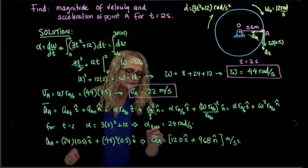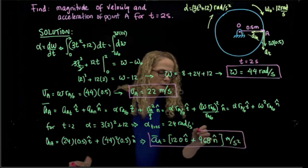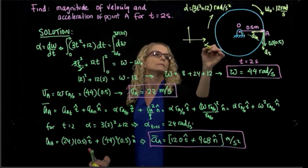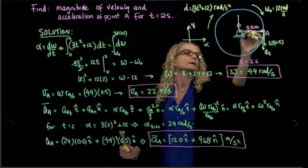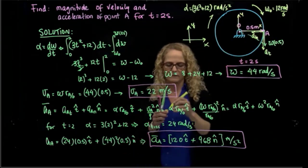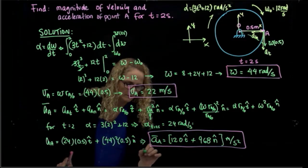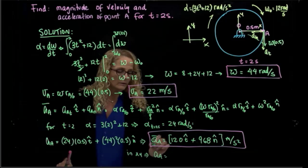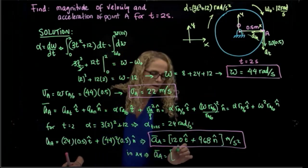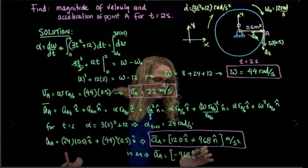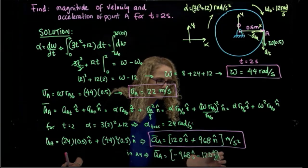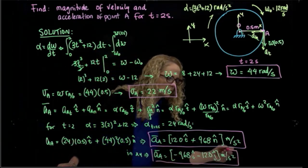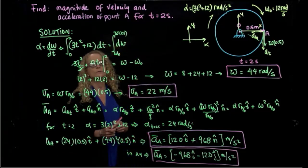This is the acceleration expressed in the tangential-normal coordinate system. If we want to relate it to an inertial coordinate system in X and Y, it can be written as negative 968 in the i-direction plus negative 12.0 in the j-direction, in meters per second squared. This is another way to express the same vector in a different coordinate system, and this completes the solution.